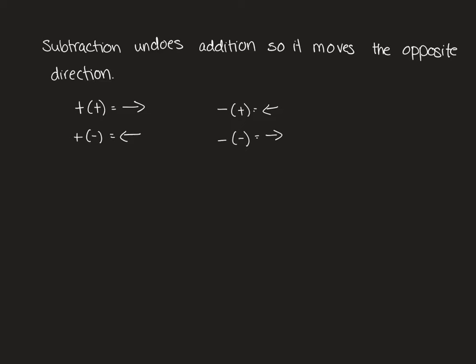Subtracting undoes addition, so it moves the opposite direction. When you add a positive you go to the right. When you add a negative you go to the left. This means we do the opposite when we are subtracting. When we subtract a positive instead of going to the right we go to the left. And when we subtract a negative instead of going to the left we go to the right.